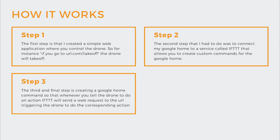Now for the big question: how does this actually work and how can you recreate this yourself? The first step is that I created a simple web application where you can control the drone. For example, if you go to the URL dot com slash takeoff, the drone will take off. If you go to whatever URL dot com slash land, the drone will land, and so on for all the commands.